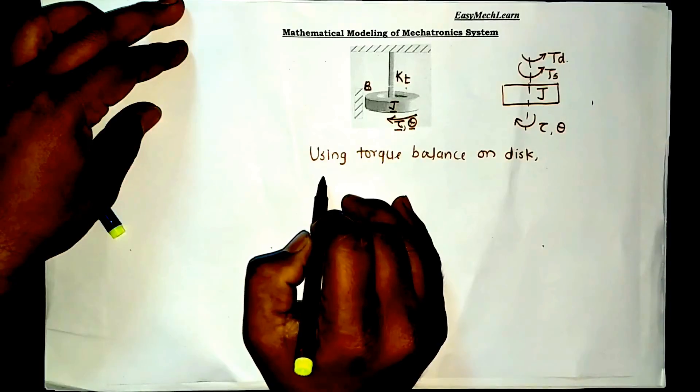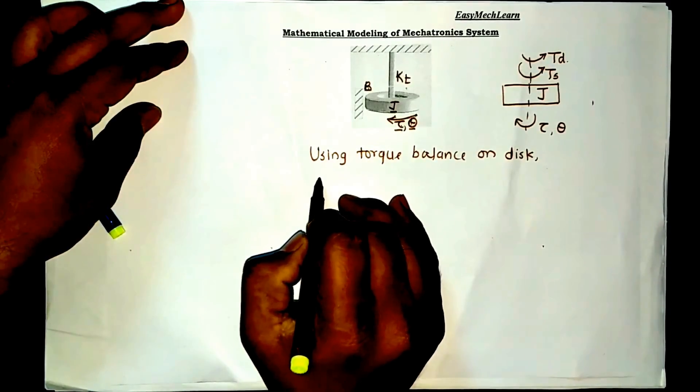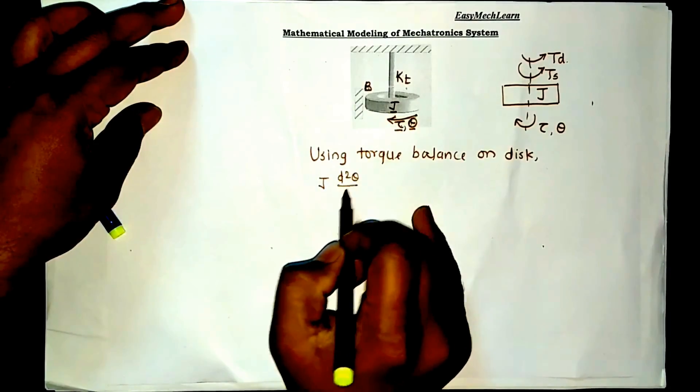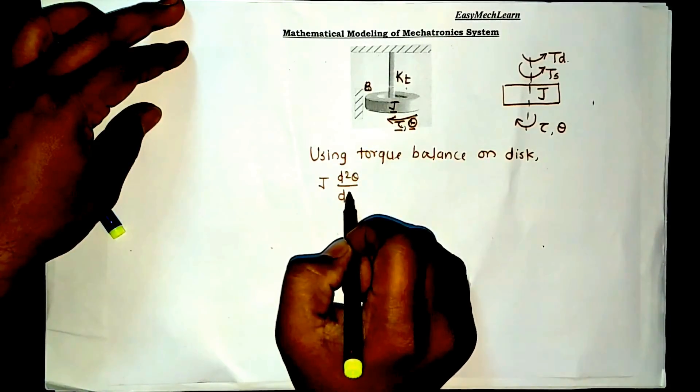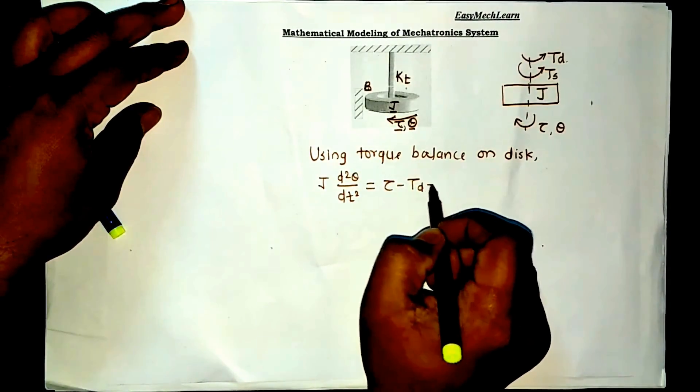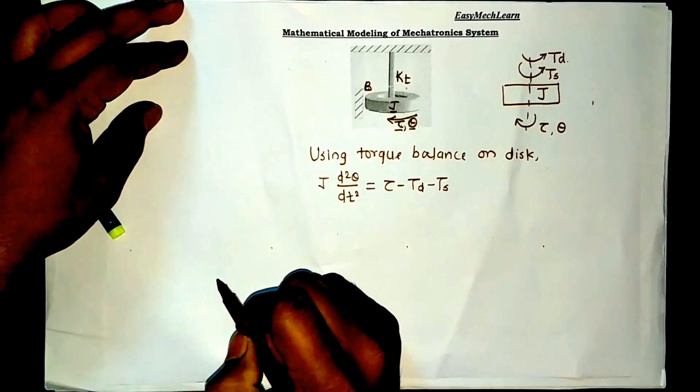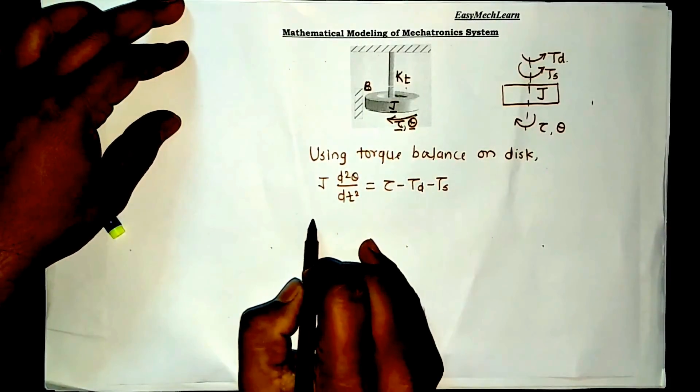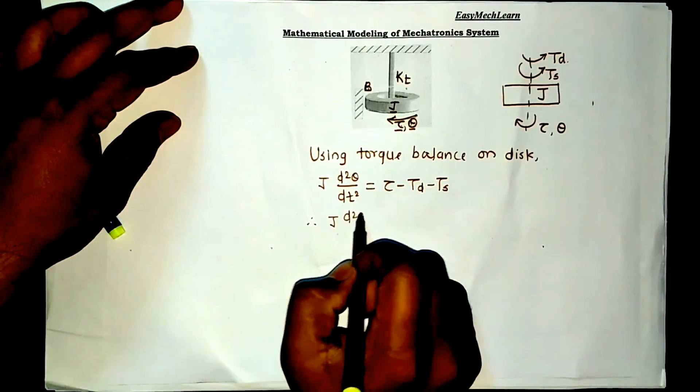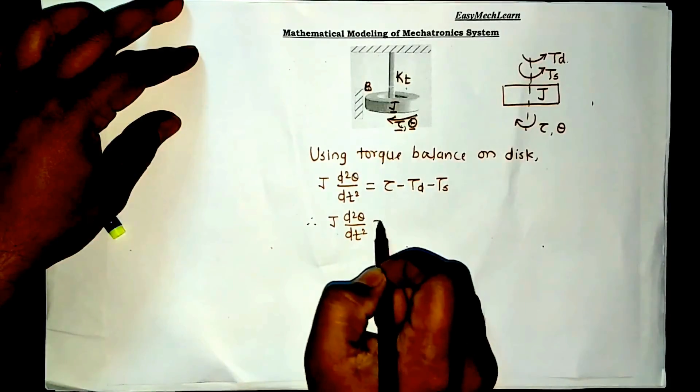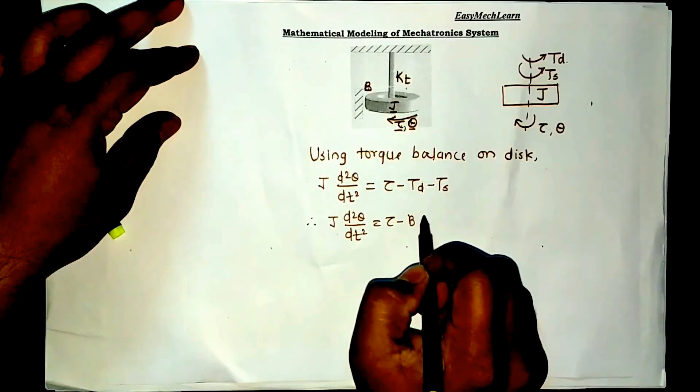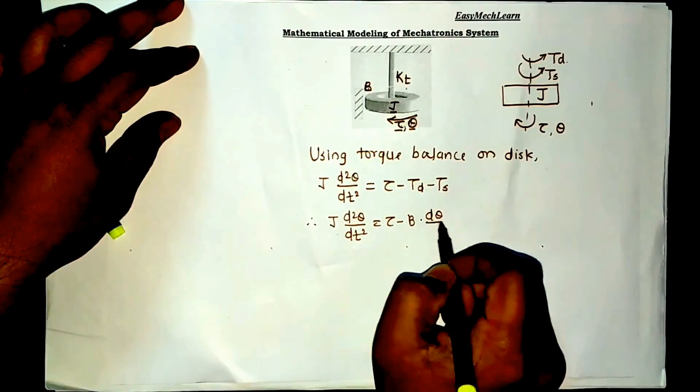Tau as J d2 theta divided by dt2. Tau minus torque of damper B d theta by dt minus Kt into theta.